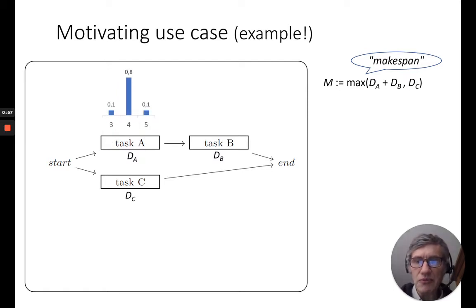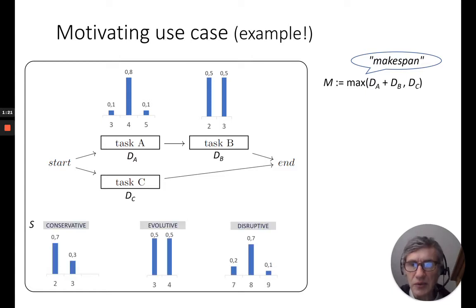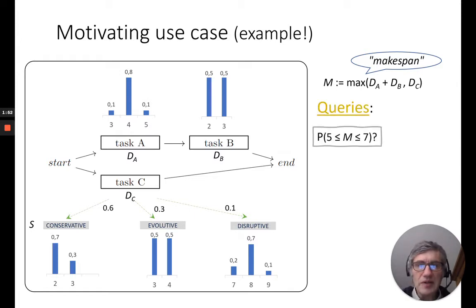Things are a bit more interesting if we assume that there is some uncertainty about this duration. For example, task A here could have a duration of three days, four days or five days with different probabilities. For task B we have another probability distribution, and to make things even more interesting for task C, we assume that there are three different scenarios possible: conservative, evolutive or disruptive, with respective probability distribution. Any of these scenarios has also its own probability to occur. You may recognize here a conditional probability table, CPT.